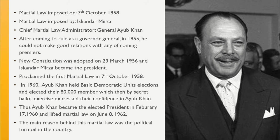After Governor General Ghulam Mohammed was compelled to go on a two-month leave to United Kingdom, Major General Iskandar Mirza entered the office of Governor General on August 7, 1955. After coming to rule as Governor General in 1955, he could not make good relations with any of the coming premiers. A new constitution was adopted on 23rd March 1956 and Iskandar Mirza became the president. Then came the fateful day of October 7, 1958, when Iskandar Mirza proclaimed martial law throughout the country and appointed Army Chief General Muhammad Ayub Khan as Chief Martial Law Administrator.